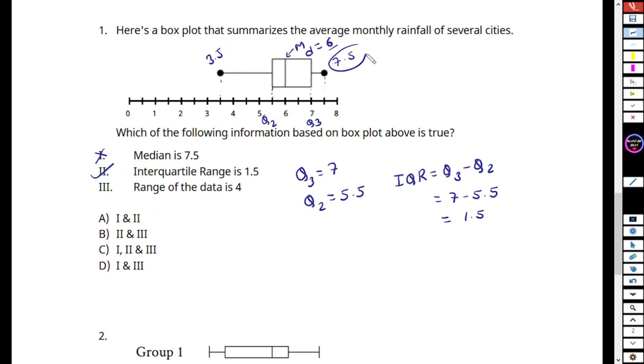Range is maximum minus minimum. What is our maximum? Maximum is 7.5. Minimum is 3.5. So our range equals 7.5 minus 3.5, so this is basically 4. Our range is 4. That's also correct. So our correct option is 2 and 3, so B is the correct answer.